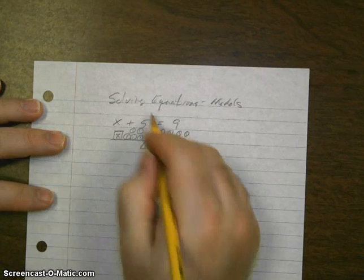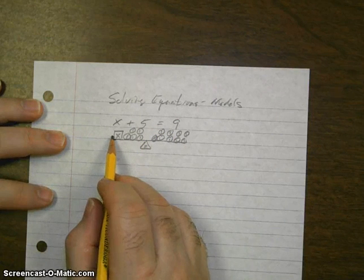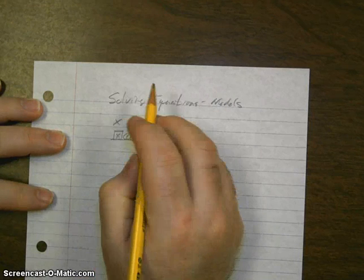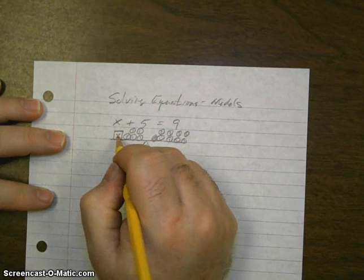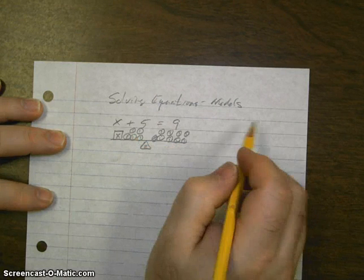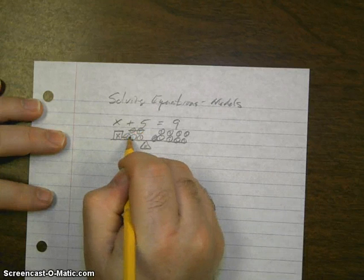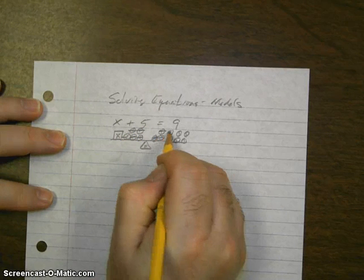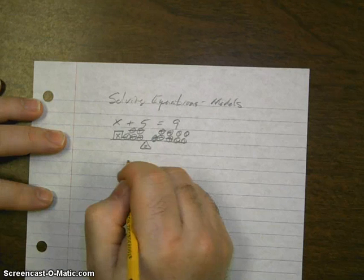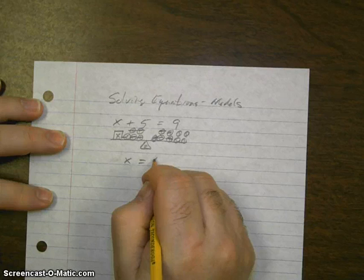In order to solve this equation, I want to have x by itself. So I have to get rid of the 5 ones with the x. But if I got rid of the 5 ones, it would be unbalanced. But if I take off 5 ones from both sides, it stays balanced. And I would have left x equals 4.